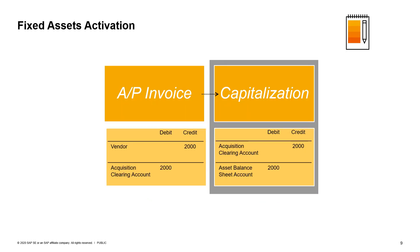The user can purchase a fixed asset using an AP invoice, which automatically generates the capitalization document. The user can choose whether to generate the capitalization document directly or to automatically generate it from the AP invoice — in both options, the asset master data is activated. The graphic shows the automatic journal entries created during the process with the associated accounts. If a vendor is not involved, the user can generate a capitalization document directly; in this case, only the capitalization journal entry will be created and the clearing account will appear as an obligation in the balance sheet. Remember that the accounts are derived from the definition in the asset master data.